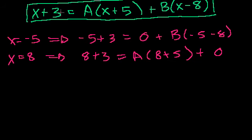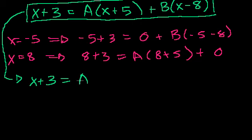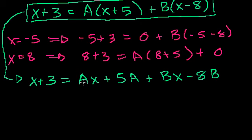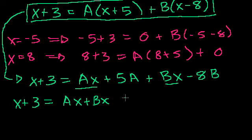The other way to solve this is to multiply out this expression. So to write out the whole thing: x plus 3 equals ax plus 5a plus bx minus 8b. And then to group the x terms and then the constant terms. You get x plus 3 equals ax plus bx plus 5a minus 8b.